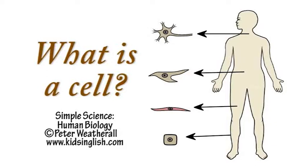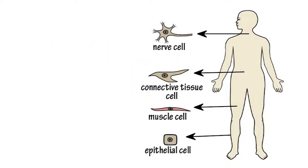Simple Science. What is a cell? The human body is made up of about a hundred trillion cells, which are the basic structural and functional units of life.